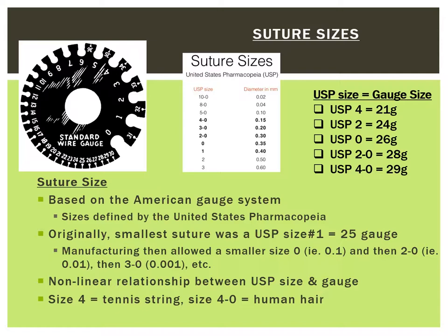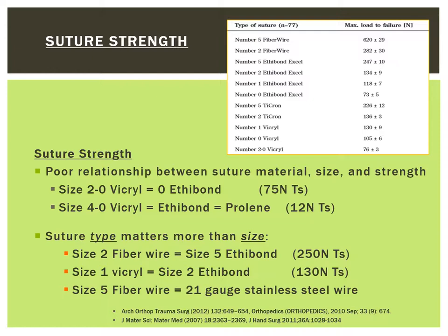These sizes are based on the US Pharmacopoeia and the American gauge system. Suture type is more important than size — for example, a size 2-0 Vicryl suture has the same strength as a size 0 Ethibond suture. A size 4-0 Vicryl, as well as Ethibond or Prolene size 4-0, all have similar strengths. Likewise, a size 2 FiberWire is equivalent to a size 5 Ethibond suture.